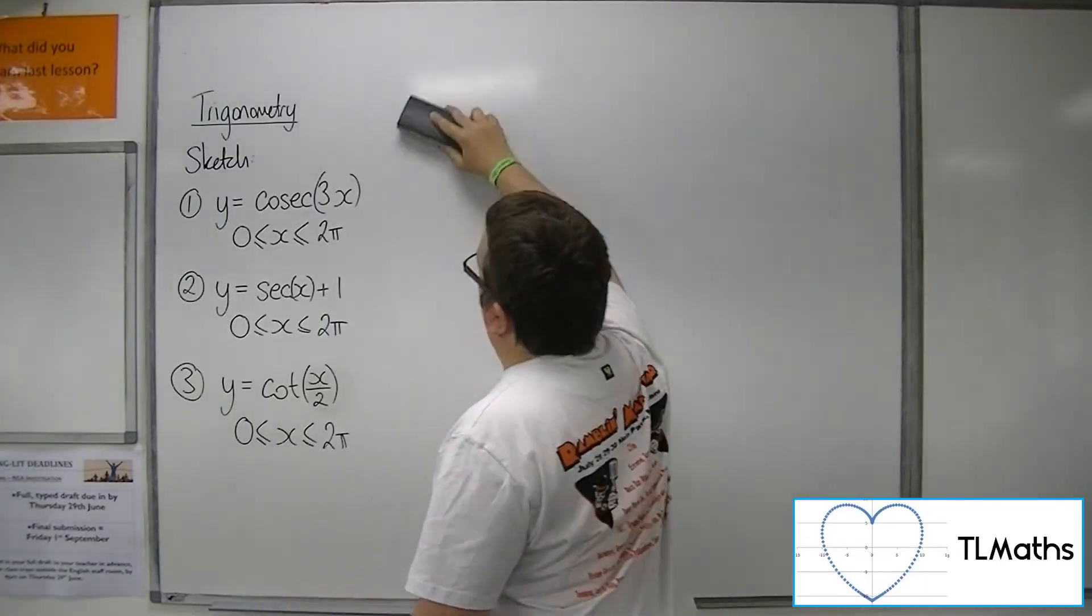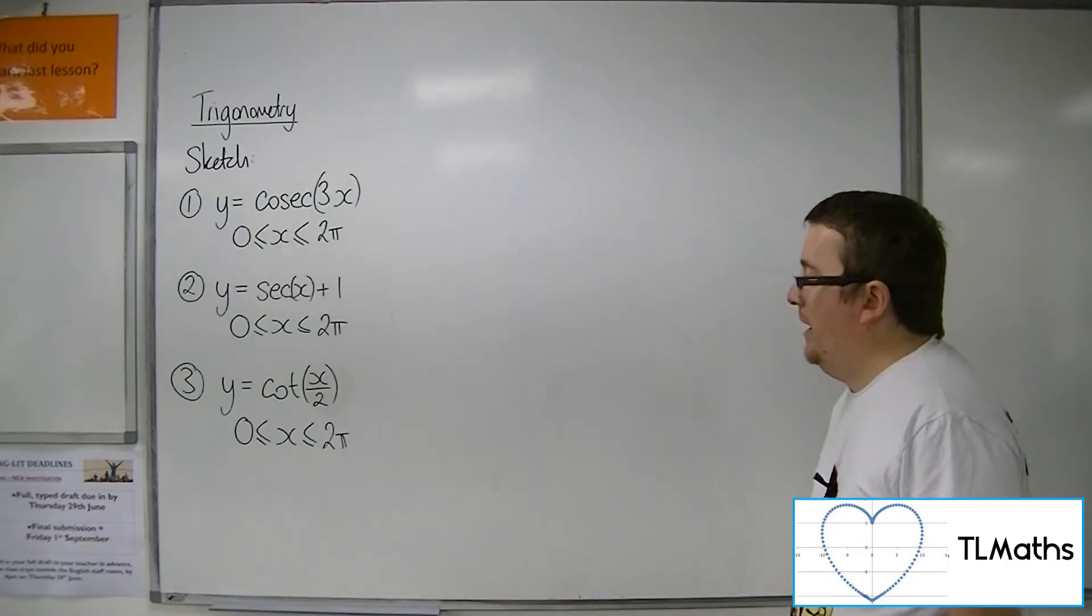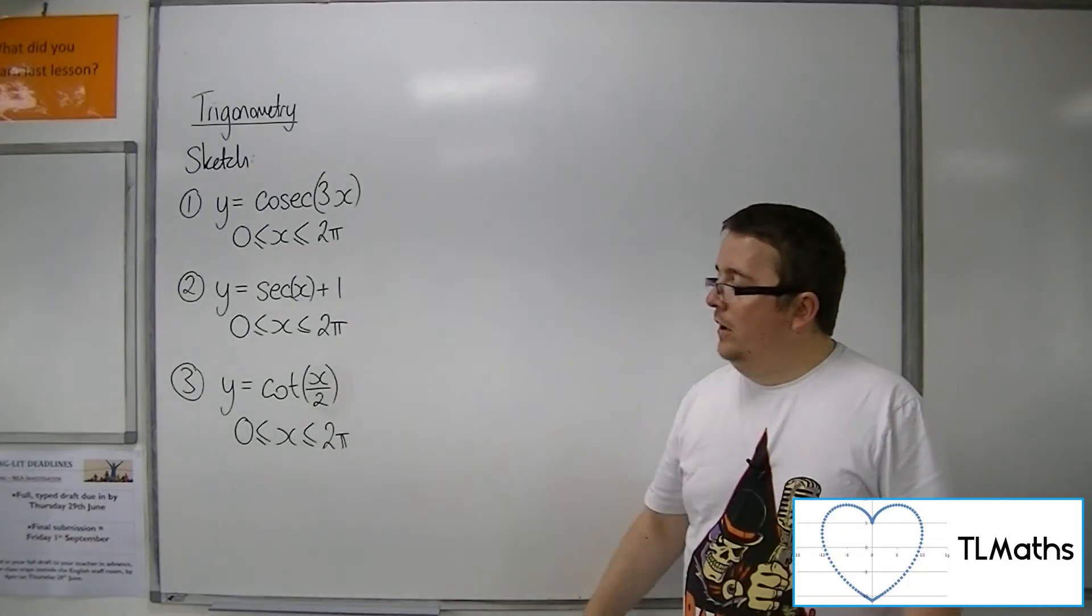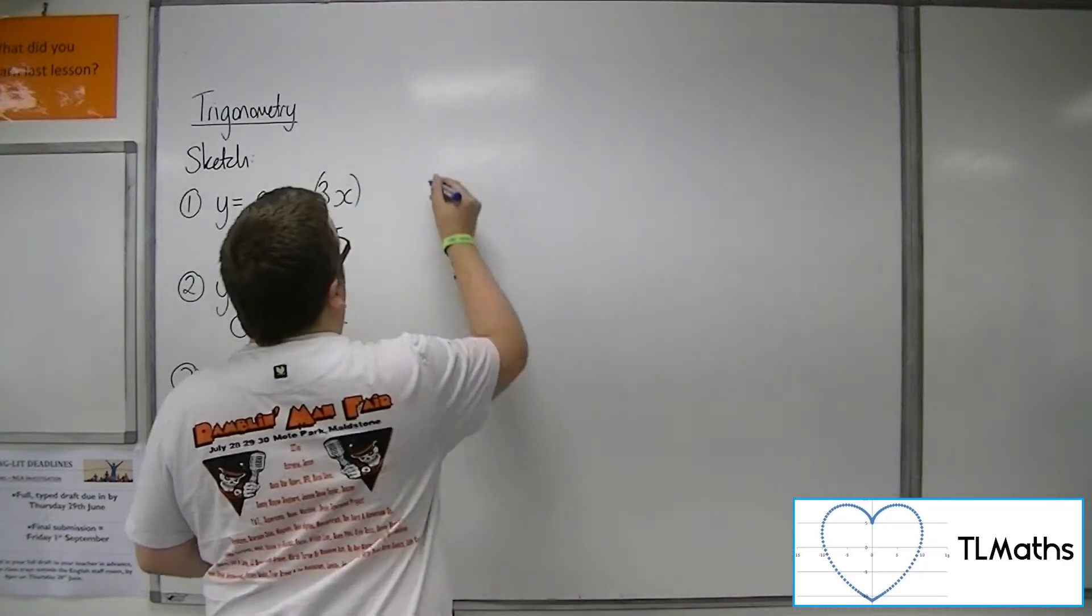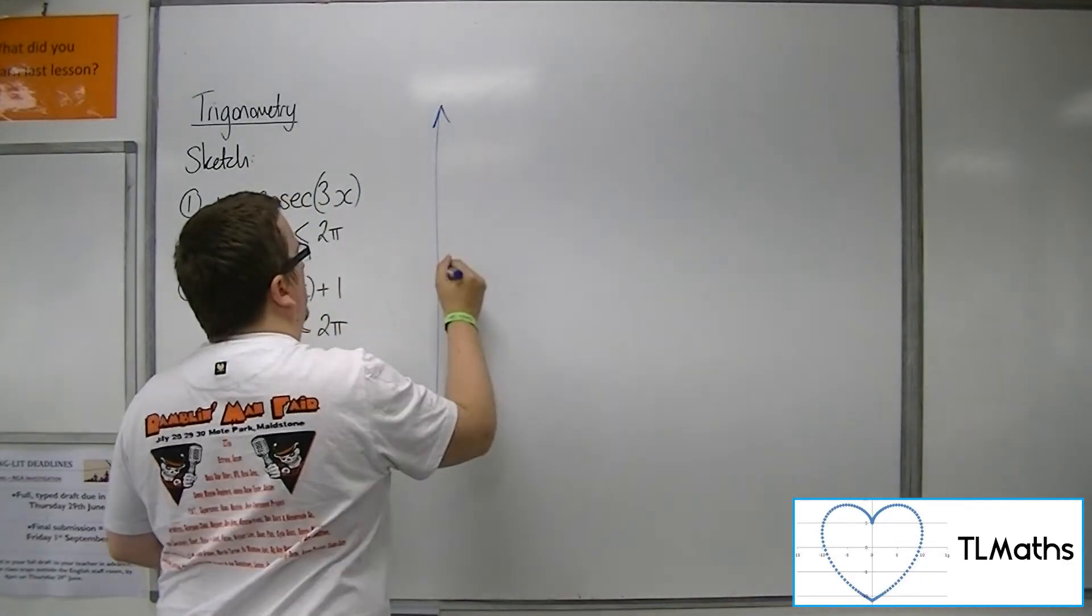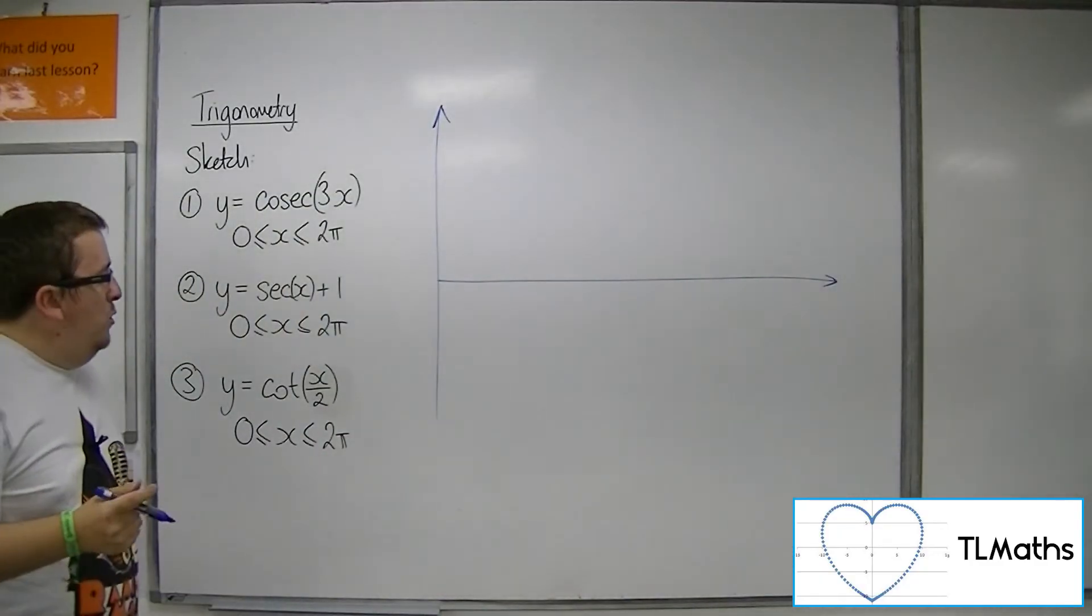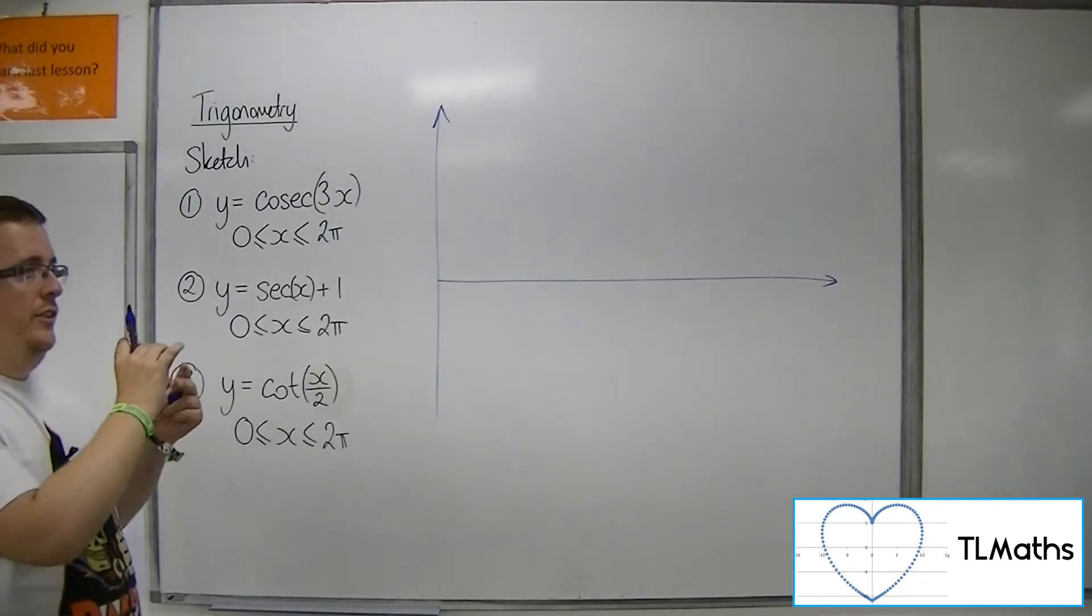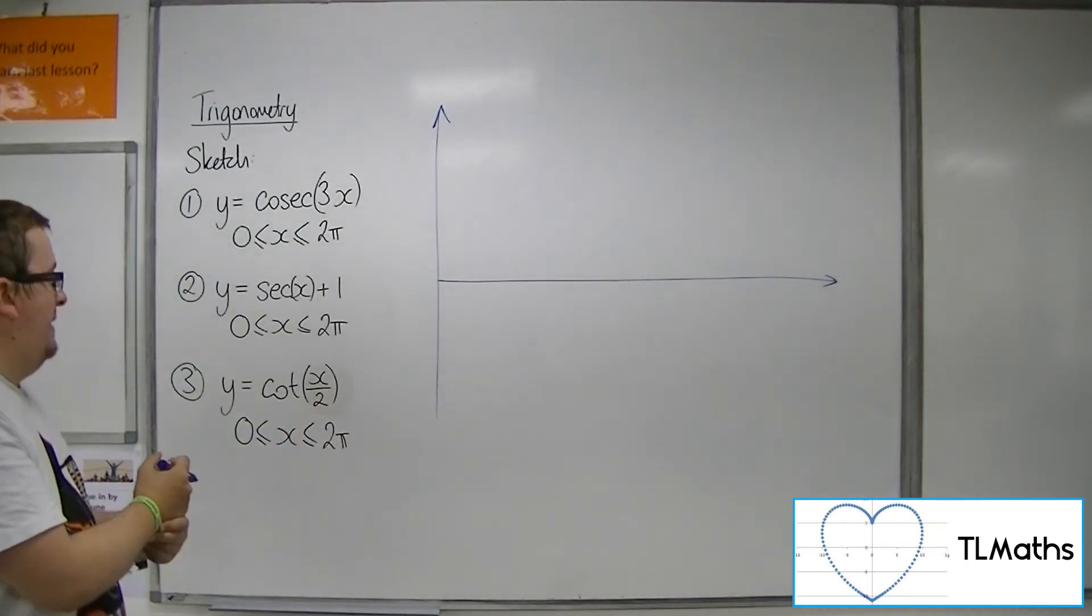So the last one is number 3. y equals cot of x over 2. So that's a stretch by factor 2 parallel to the x-axis. So we know that tan is 0 at 0, then at 180, then at 360, etc.